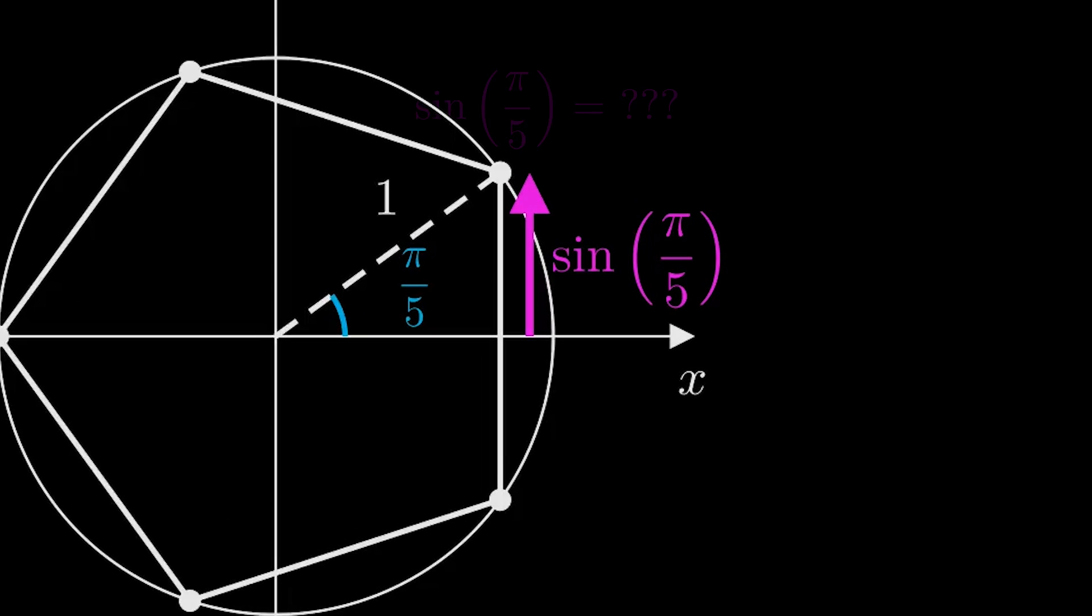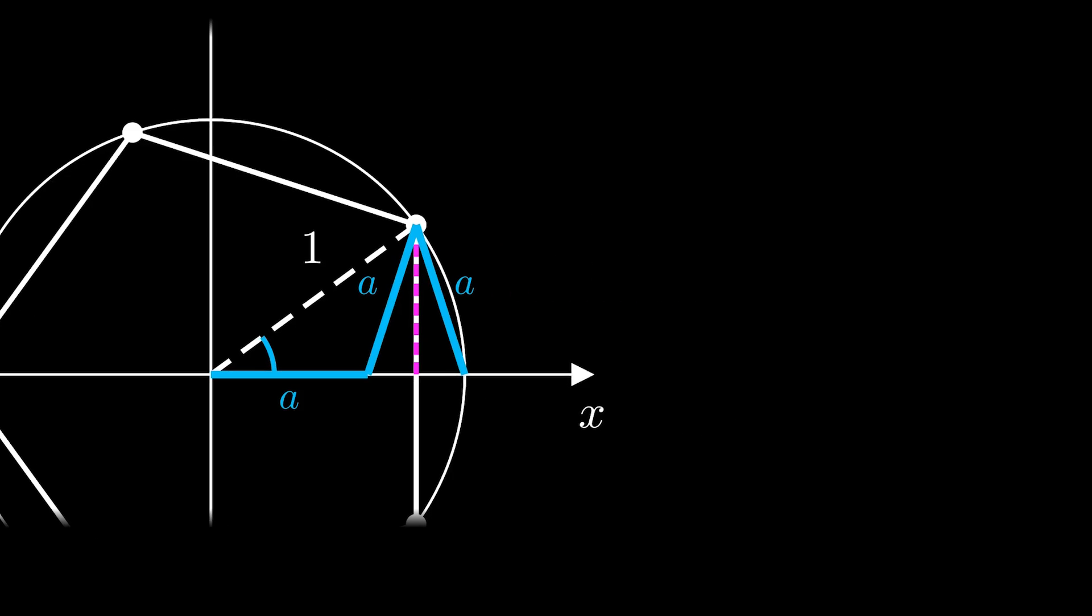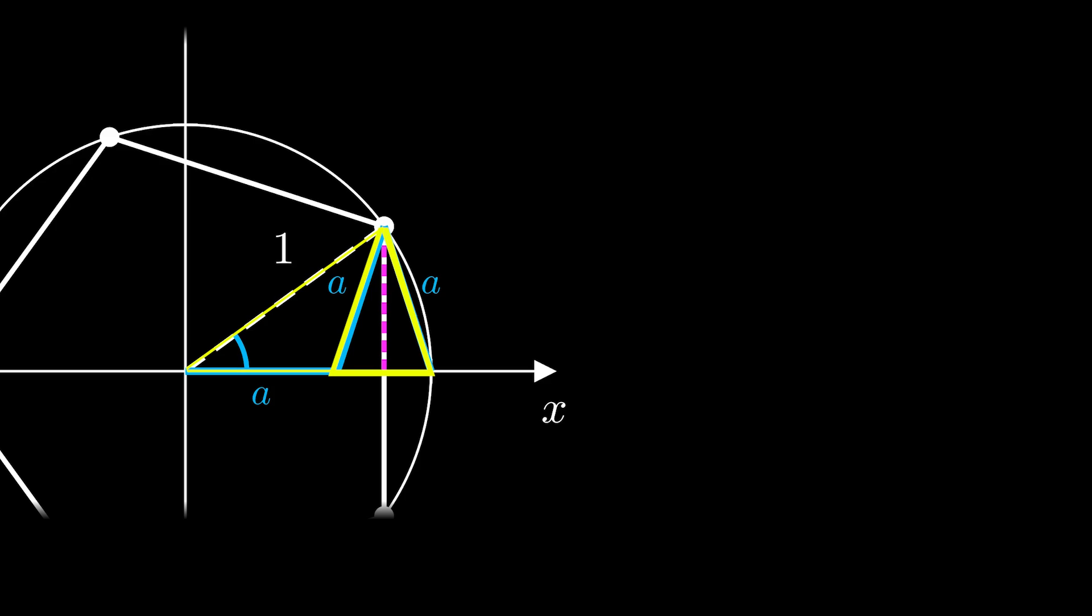We can calculate it by constructing some isosceles triangles. Let's say these blue line segments all have length a. What we've constructed there is called a golden triangle. It's an isosceles triangle with one angle of π/5 and two angles of 2π/5, or 36, 72, and 72 degrees.